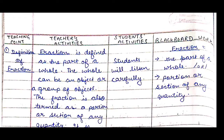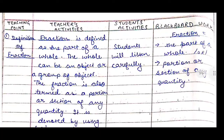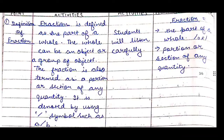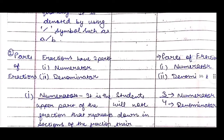A fraction is defined as the part of a whole. The whole can be an object or a group of objects. A fraction is also termed as a portion or section of any quantity. It is denoted using the symbol a/b. We write the main points on the board: fraction means the part of a whole, or portion or section of any quantity.